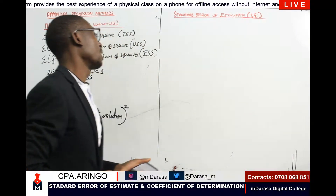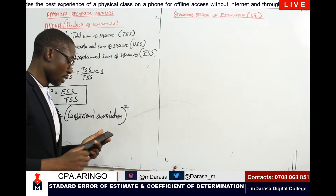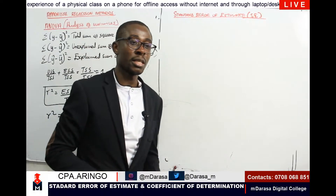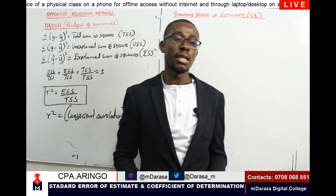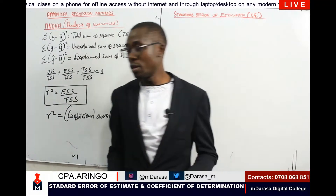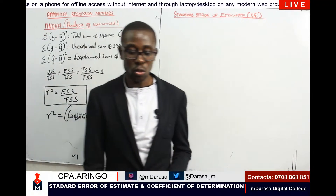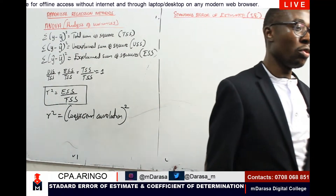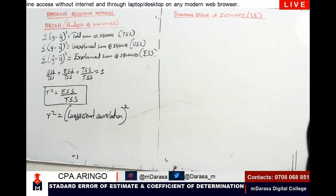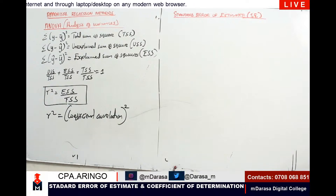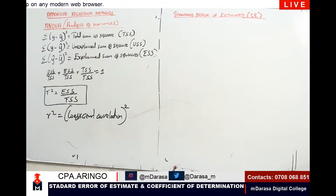Now that we've analyzed the concept of analysis of variances, understanding the standard error of estimate will also be very easy for us. The standard error of estimate basically measures the unexplained variance proportion.